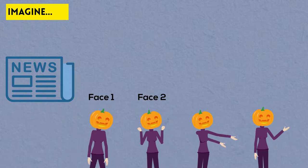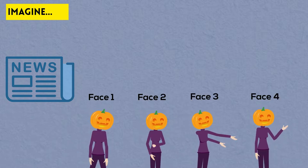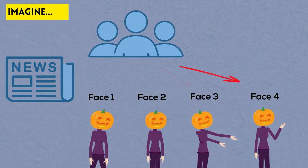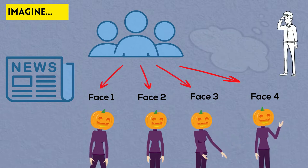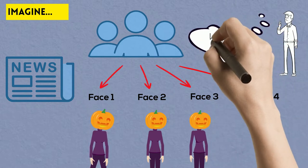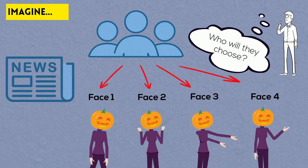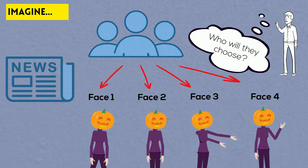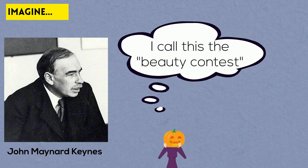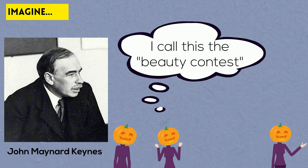Imagine that a newspaper publishes pictures of several women or men and the readers are asked to select the one that is most beautiful. But the trick is you get a prize if you select the face that was selected by most other participants. So in other words, you have to choose the face that you think most other participants will choose and not the one that you actually consider to be the most attractive. The great economist John Keynes described this game in 1936 and called it the beauty contest.